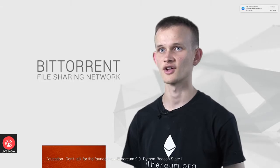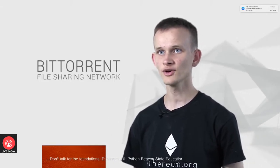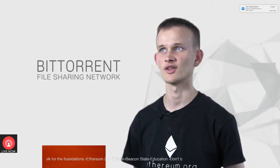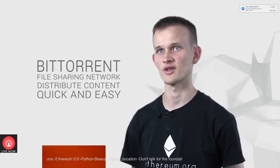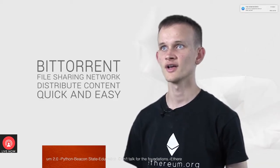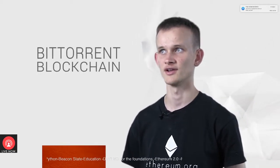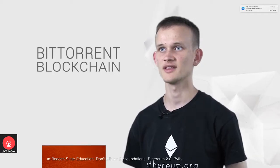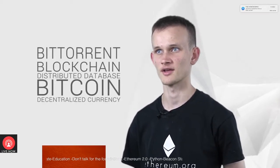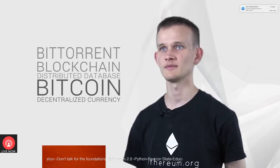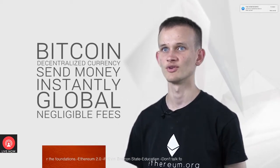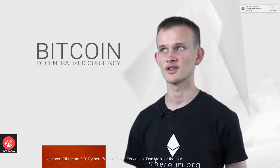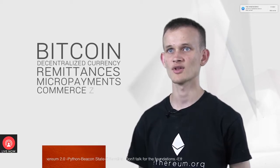BitTorrent, a file sharing network developed in the early 2000s, is arguably the first decentralized application to have been created. BitTorrent allows anyone to share any kind of file with anyone else in the world, allowing people to distribute content quickly and easily, even if they do not have the resources to pay for their own website or server. Five years later, Satoshi Nakamoto came up with the idea of a blockchain, a sort of distributed database, and used it to build Bitcoin, the world's first decentralized currency, allowing people to send money instantly anywhere around the world with negligible fees. Bitcoin is increasingly being used for international remittances, micropayments, and commerce online.